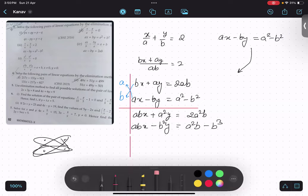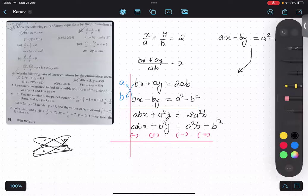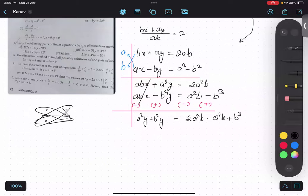We will change the sign, so this will be minus minus plus. Is this thing clear? Yes. This will get cancelled. What is remaining? A square y plus b square y equals to 2a square b minus a square b plus b cube. Clear? Yes. Over here what will be common?